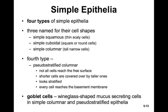There are four types of simple epithelia. Three are named for their cell shapes: simple squamous (thin and scaly cells), simple cuboidal (square or round cells), and simple columnar (tall narrow cells). The fourth type is pseudostratified — it seems stratified but actually is not. Not all cells reach the apical surface, so shorter cells are covered by taller ones, making it look layered. However, every cell reaches the basement membrane. We'll often see goblet cells — wine-glass-shaped mucus-secreting cells — in simple columnar and pseudostratified epithelia.